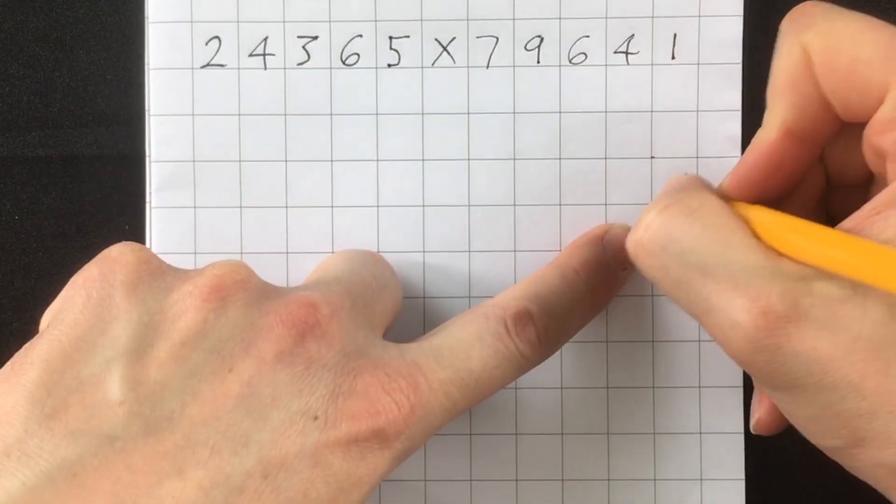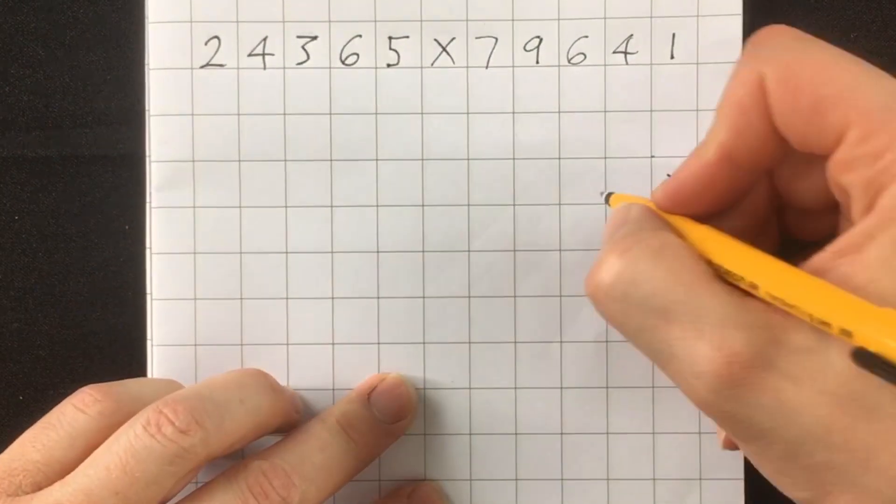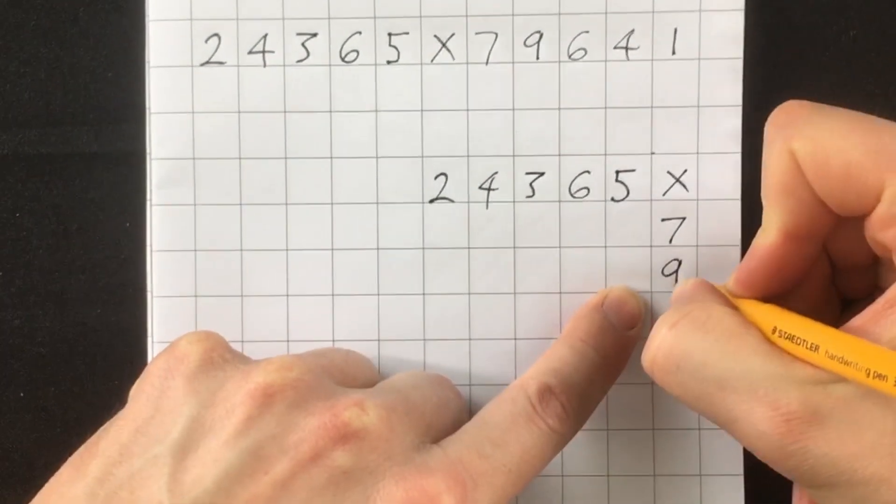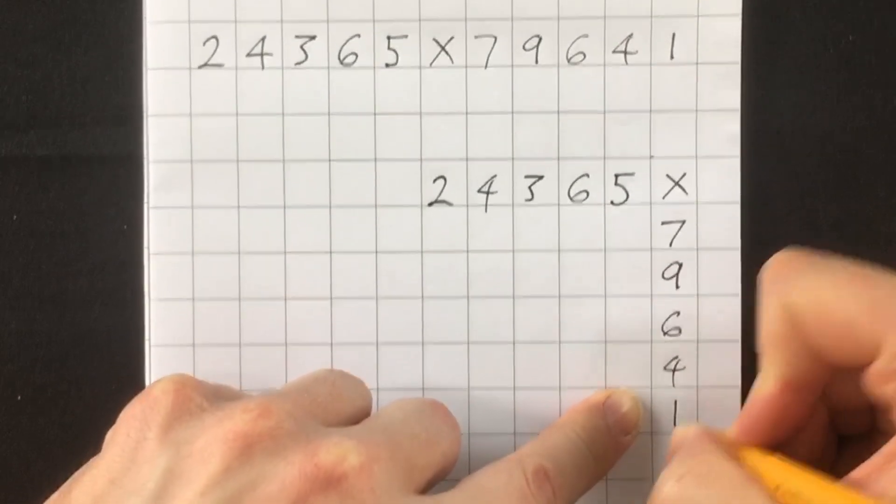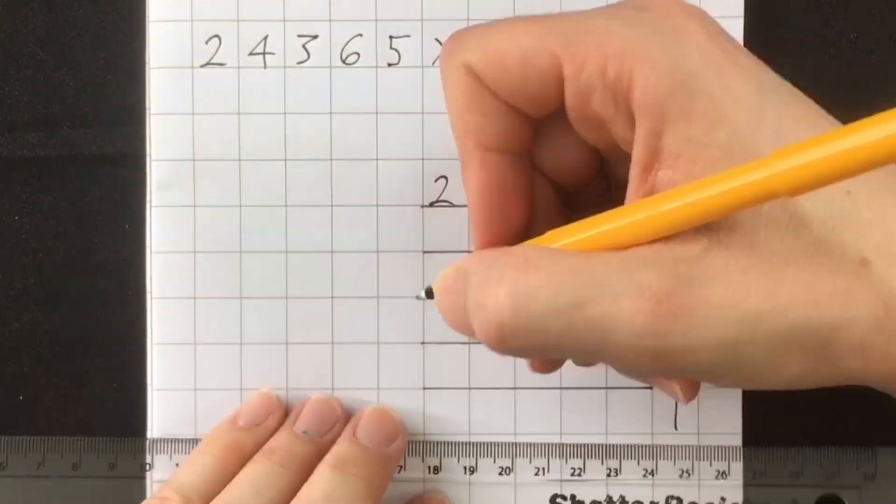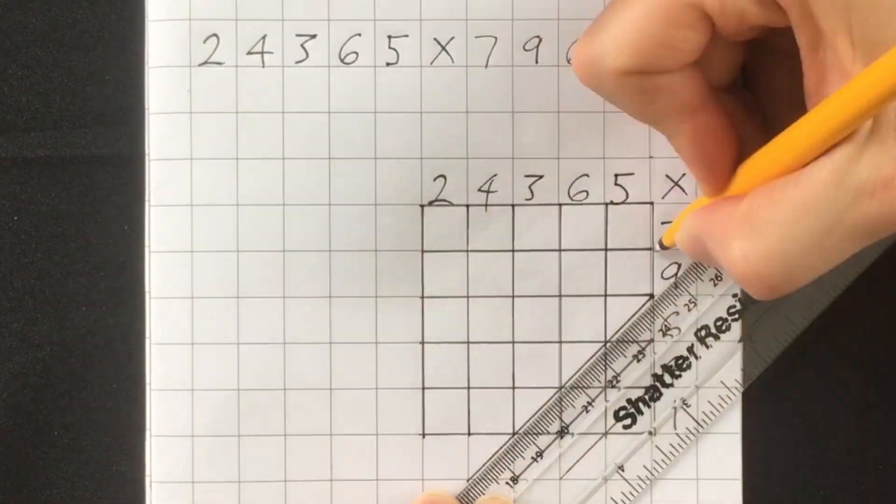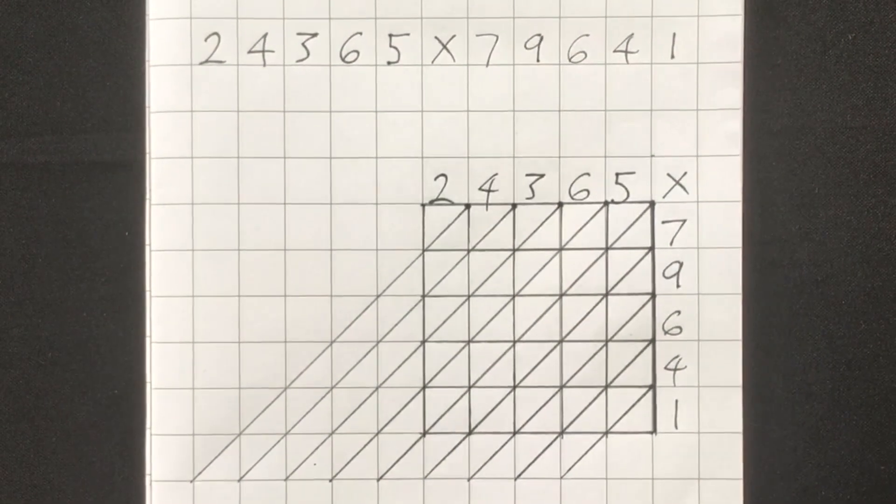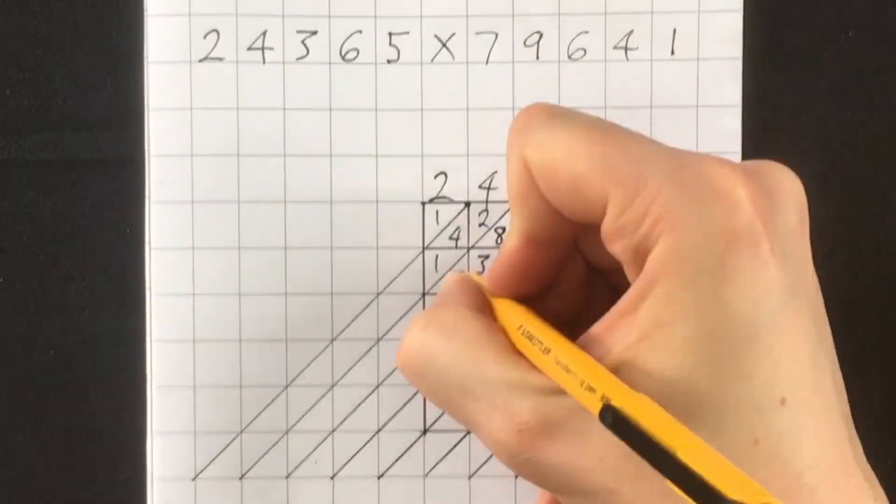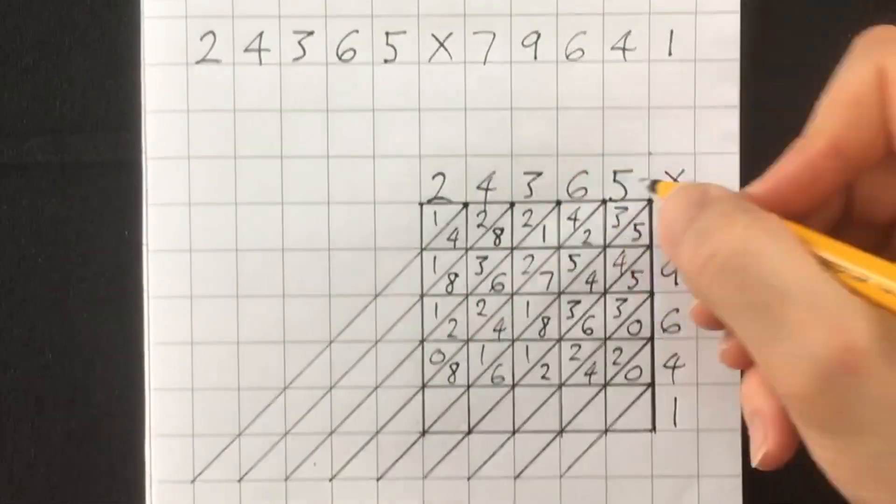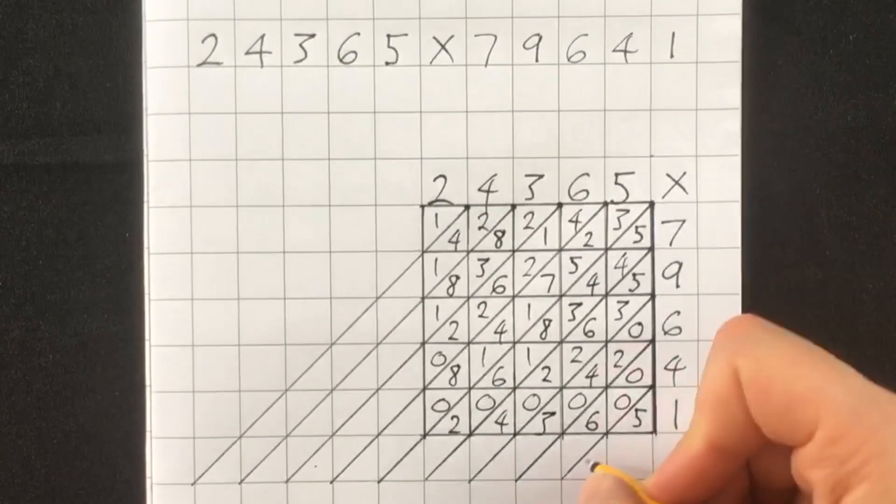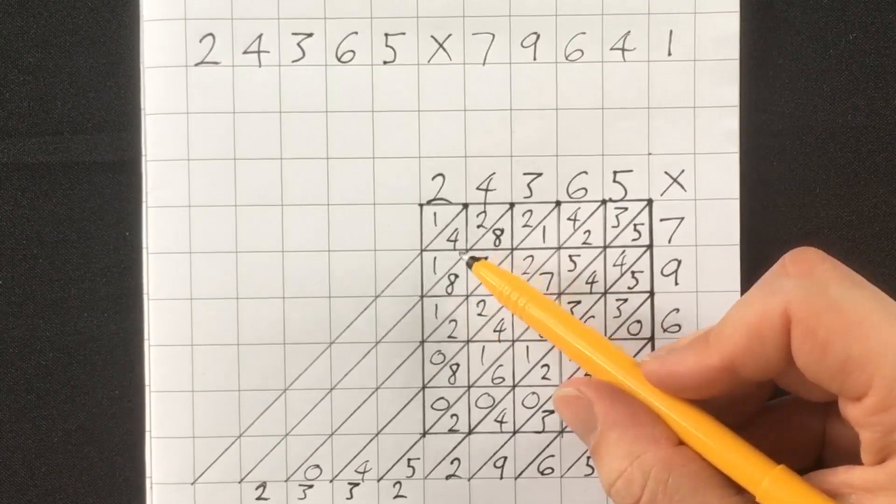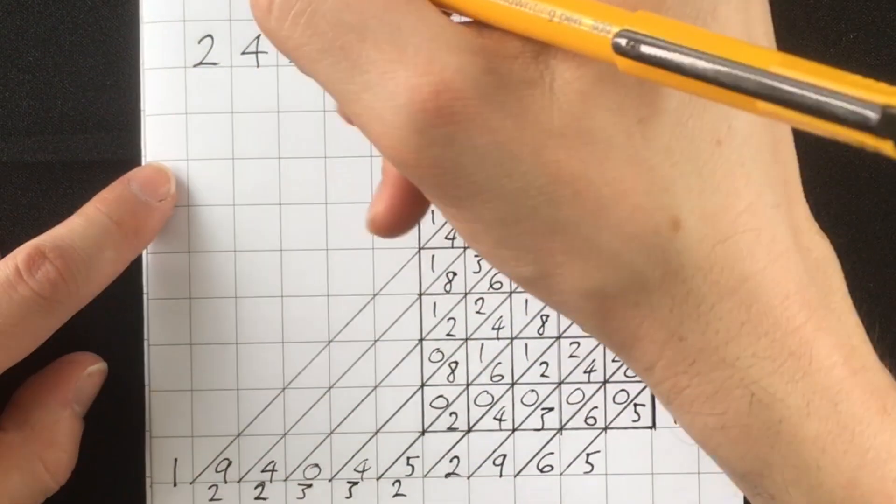Same method as before, I put my multiplication sign here. And I write my first number, two, four, six, three, five. And my second number, seven, nine, six, four, one, goes down the side. And I draw my grid. And now let's fill in the numbers. Now add up the diagonals.